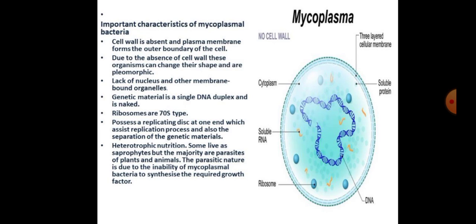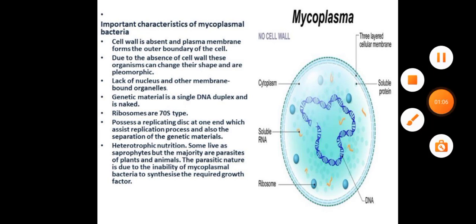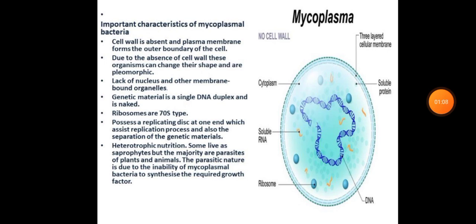Some more interesting features: they are unicellular, prokaryotic, non-motile, highly pleomorphic, and filtrable through bacteria filters. They are resistant to antibiotics. Their DNA is linear double-stranded, extending almost throughout the cell.